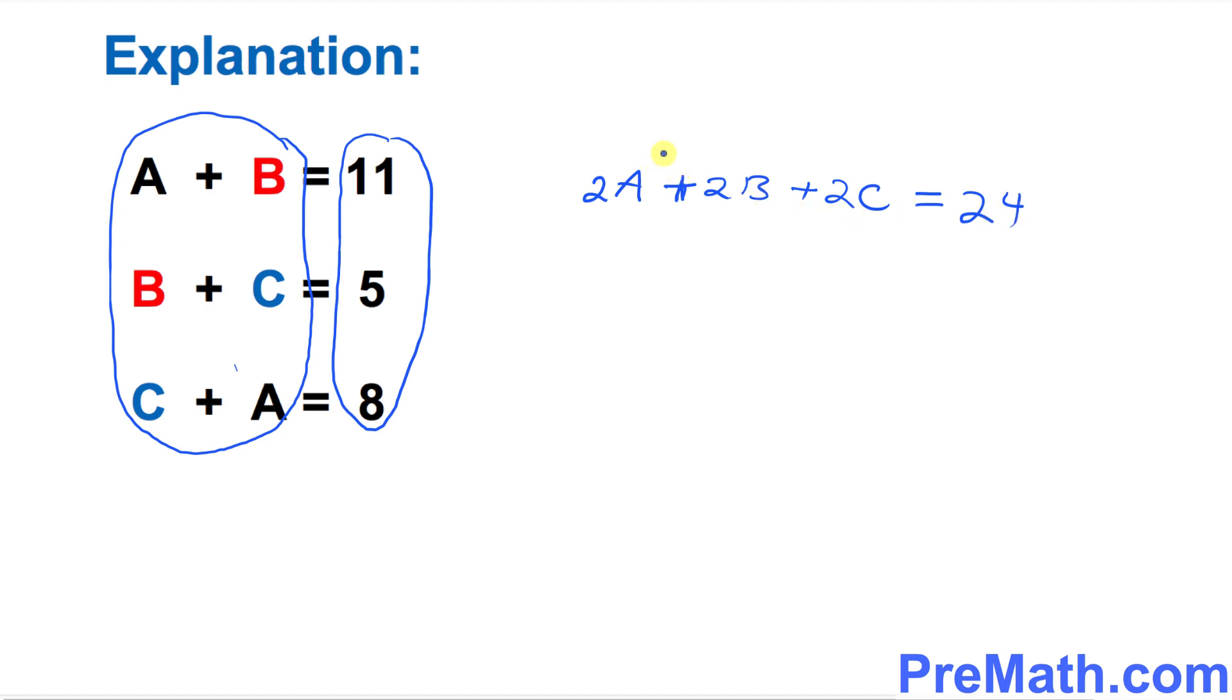Now you can see on the left hand side this could be written as twice of a plus b plus c equals 24.